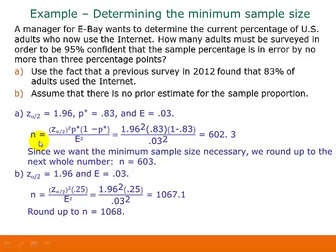In this case, since we have a prior estimate, we're using the first formula. So we have 1.96 squared times 0.83 times 1 minus 0.83 divided by 0.03 squared. And that gives us 602.3. Now, since we're looking for our minimum sample size necessary in these problems, we always have to round up to the next whole number. So we would round up from 602.3 up to 603. That's the minimum sample size necessary using this prior estimate for p-hat.